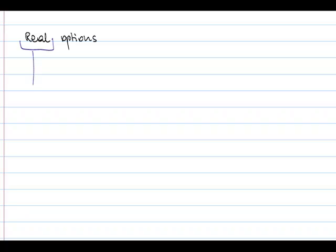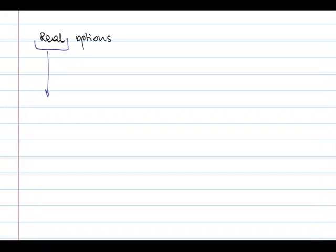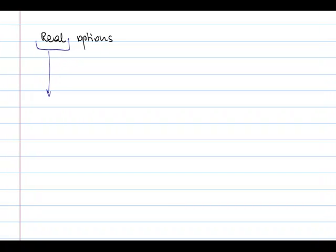Why are they called real options? That is to separate them from theoretical options. In theory we can do whatever we like, but in reality there are only certain things we can do — other things, despite how much we would like to do them, we can't. If we have real options — something we can really do — maybe we don't want to do it now, but we can do it if the situation requires it.